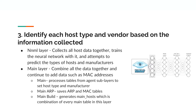ARP and MAC tables are stored in main ARP for record keeping and asset management. The main build generates main hosts, which is the final combination of every main table in the main layer.